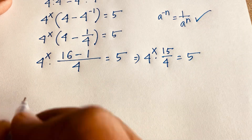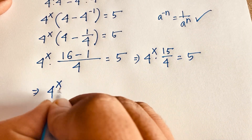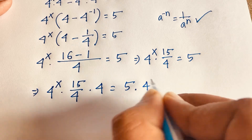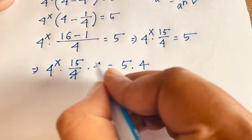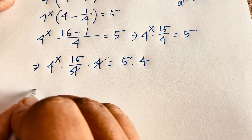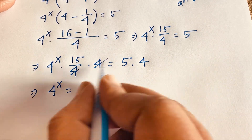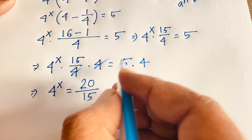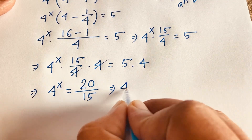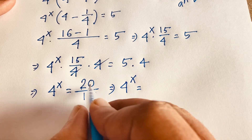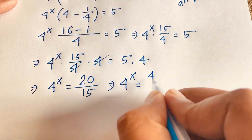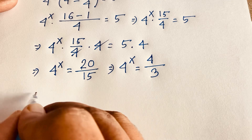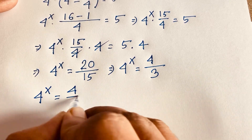Now, if I multiply both sides by 4, we get 4 to the power x times 15 over 4 times 4 equals 5 times 4. The 4s cancel out. We find 4 to the power x equals 20 divided by 15. Simplifying by dividing both top and bottom by 5: 20 divided by 5 is 4, and 15 divided by 5 is 3. So we get the nice result: 4 to the power x equals 4 over 3.